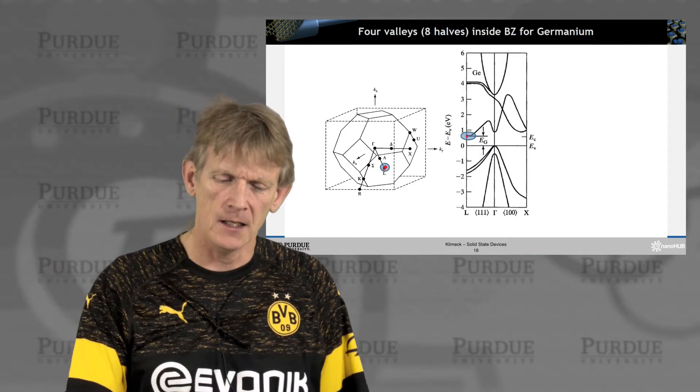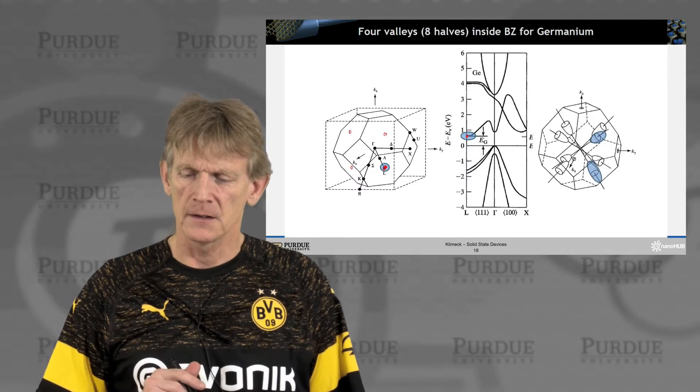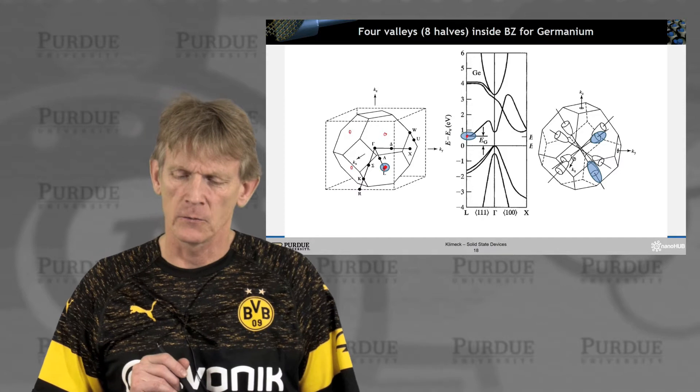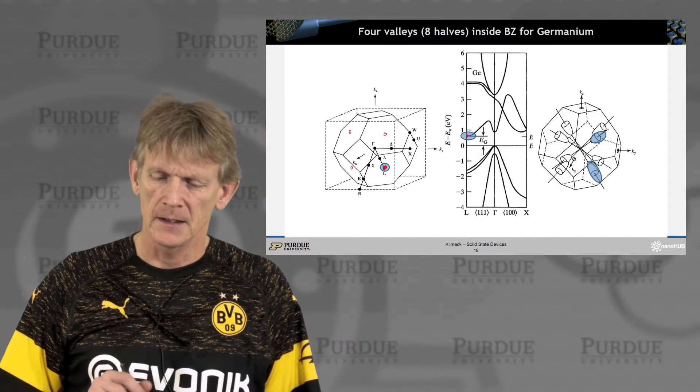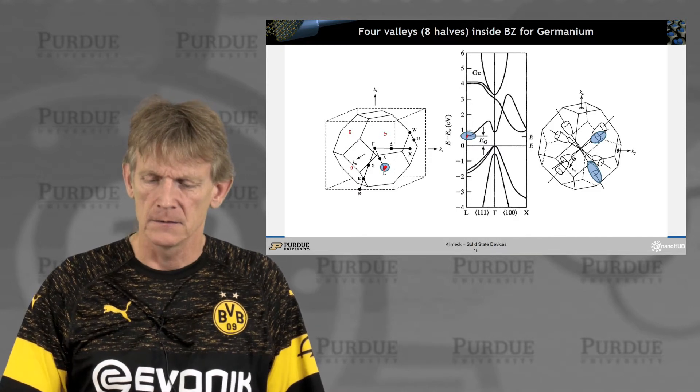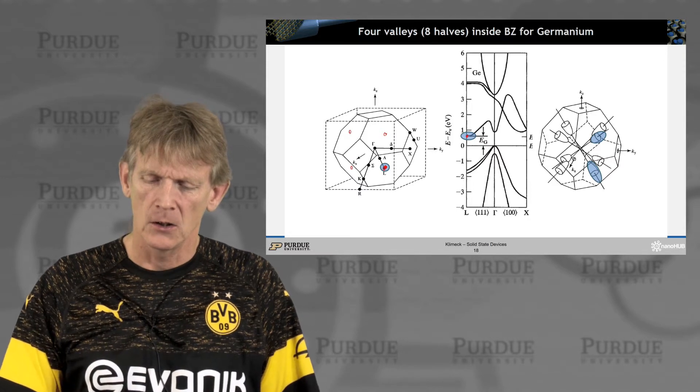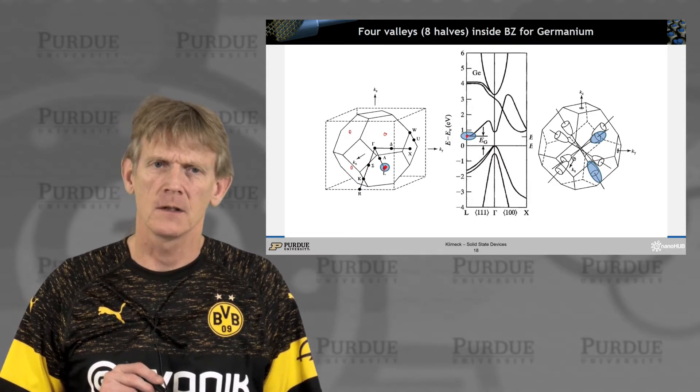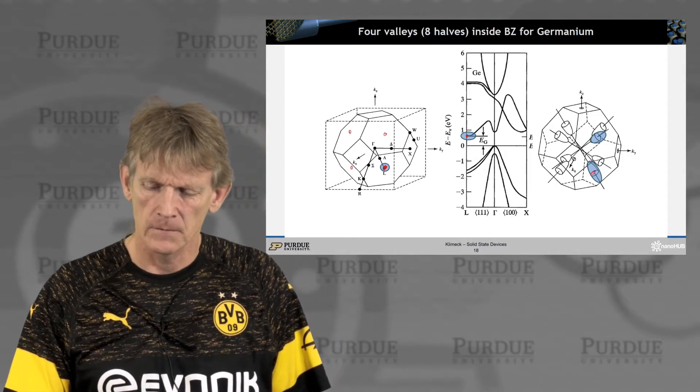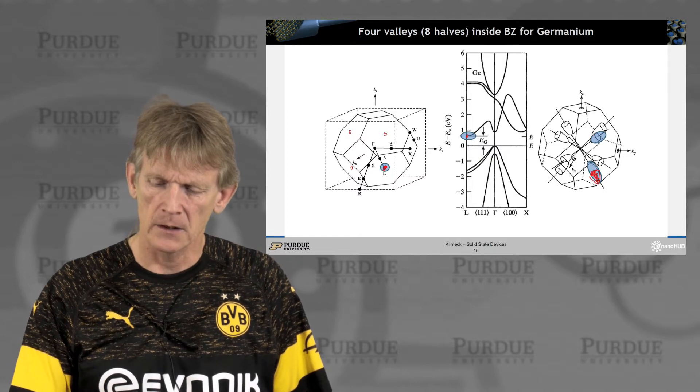We also know that there's eight of these kind of surfaces here in this structure, and that is what you would get if you plot it in a slightly different way. So there's eight ellipsoids that are bisecting the Brillouin zone edge. And when I say bisecting, I mean only half of the ellipsoid is actually inside the first Brillouin zone. The other components of it are actually in the neighboring Brillouin zone.